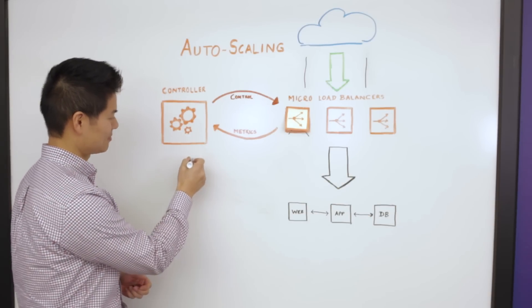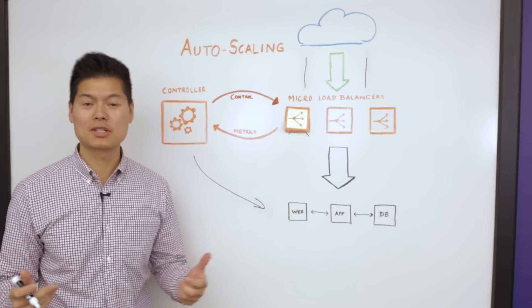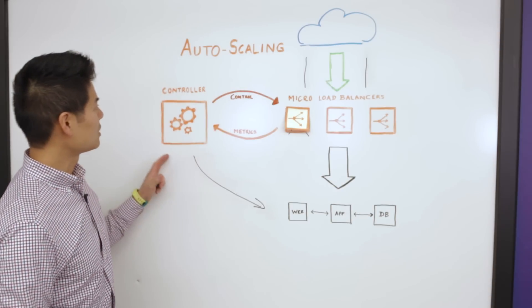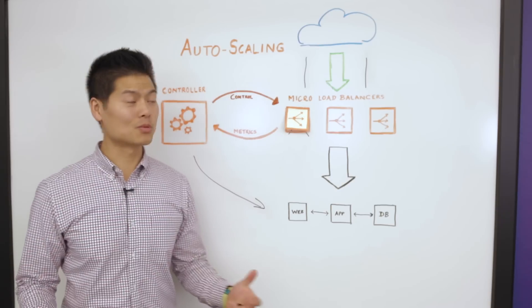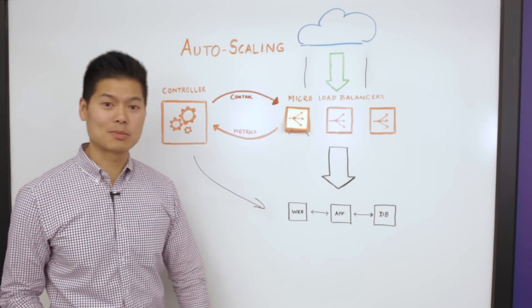Lastly, if the controller can plug into your app orchestration framework, the controller can also scale out backend resources. Isn't that a much better way of auto-scaling your application tier?